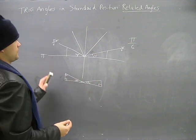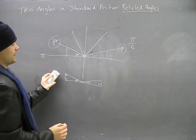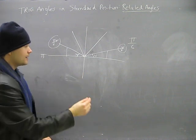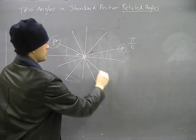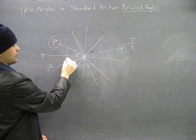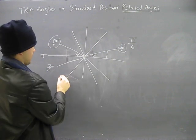What that means is that these angles, 5/6 pi and 1/6 pi are related angles. So, not only that, if I keep going here, right, so this would be 7/6 pi. It also makes a triangle that is similar to that triangle.